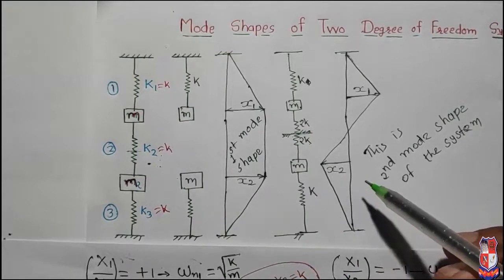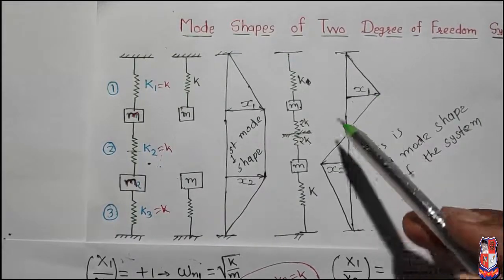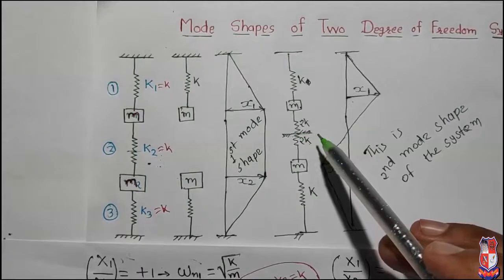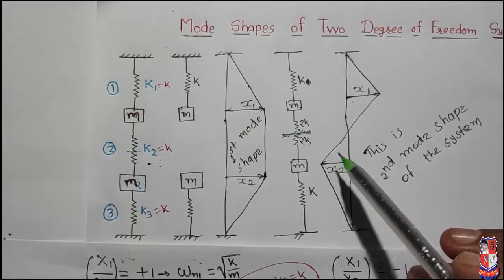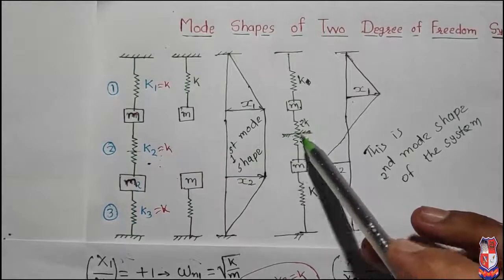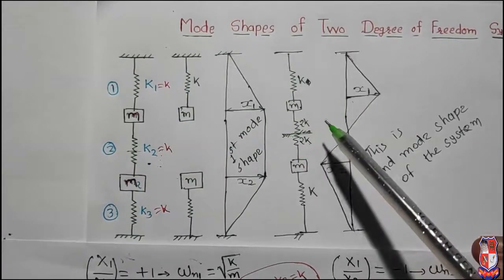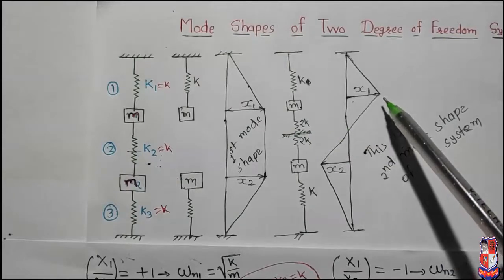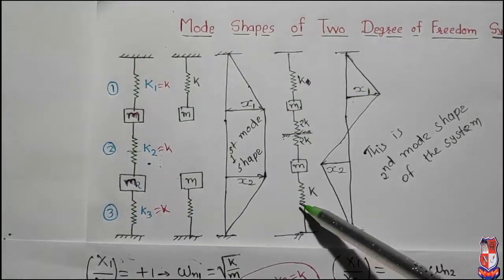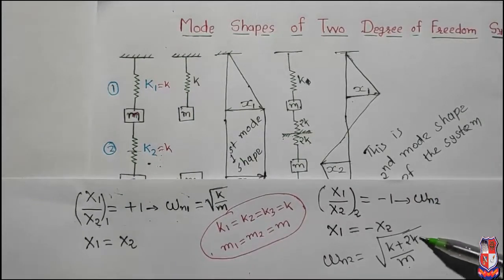In the second mode of vibration, the two masses are exactly out of phase — the two ends of the intermediate spring move by the same amount in opposite directions. Thus, the midpoint of the spring will be at rest, and we can consider the intermediate spring to be cut into two and arrested at the middle point. We know that when a spring is cut into two, its stiffness is doubled, and when two springs are in parallel, their stiffnesses are added up. Thus, the equivalent system is converted into a single-degree-of-freedom system, and the natural frequency is omega_n2 = under root (k + 2k) by m.